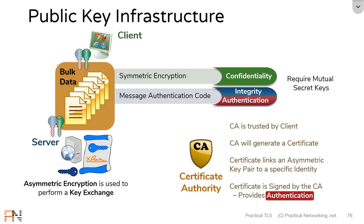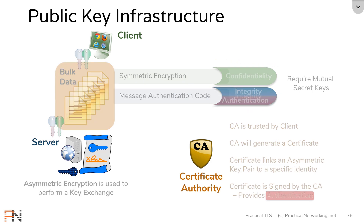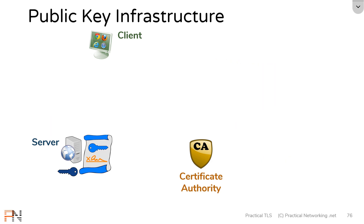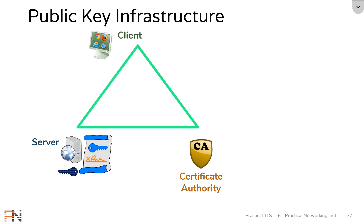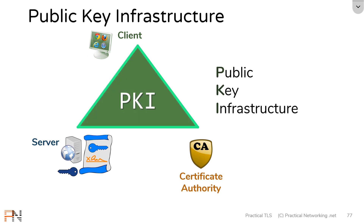The main idea is that you cannot attain these three things — confidentiality, integrity, and authentication — unless you have all three of these key players. And these three key players all form a triangle known as the public key infrastructure.